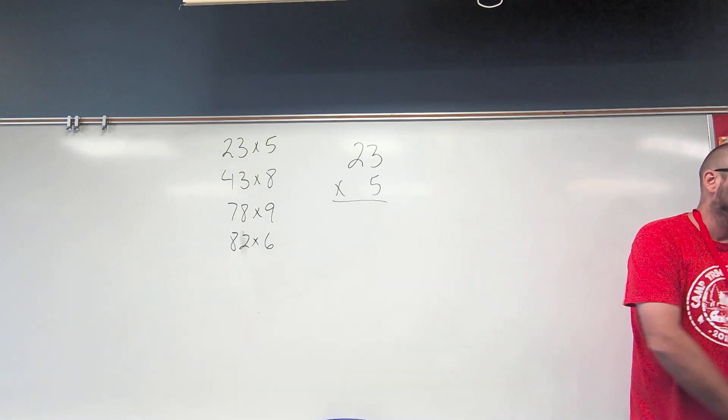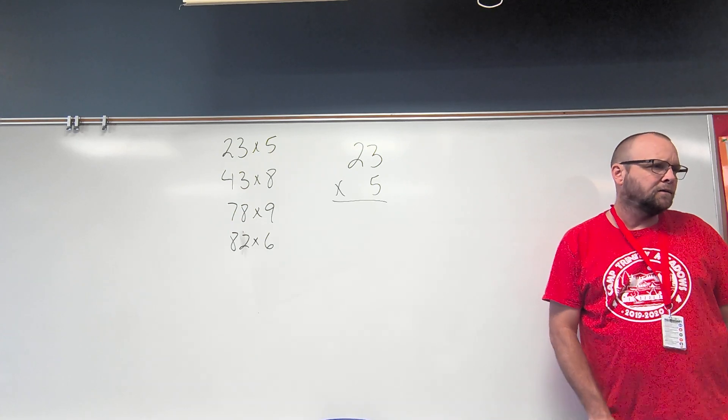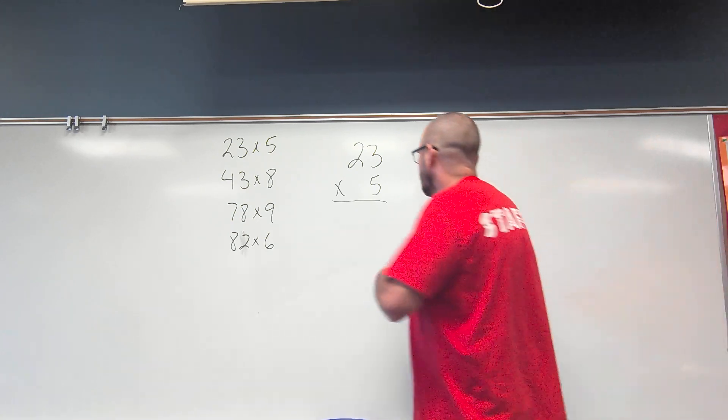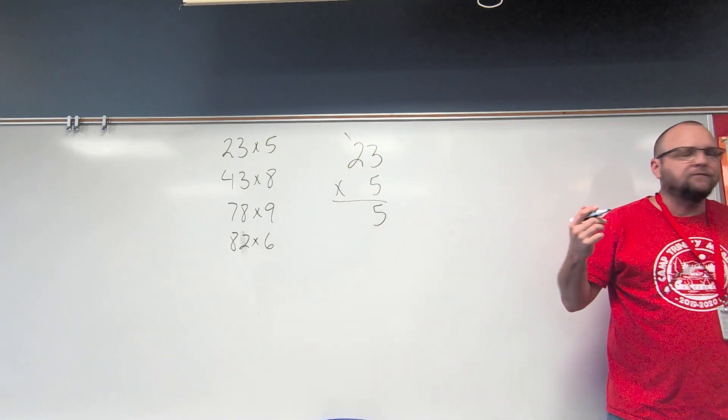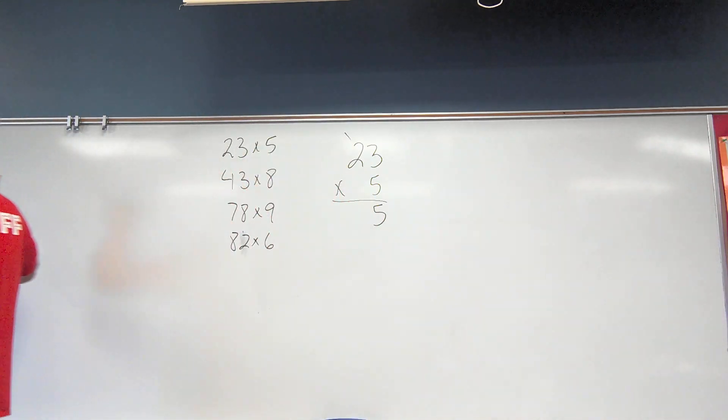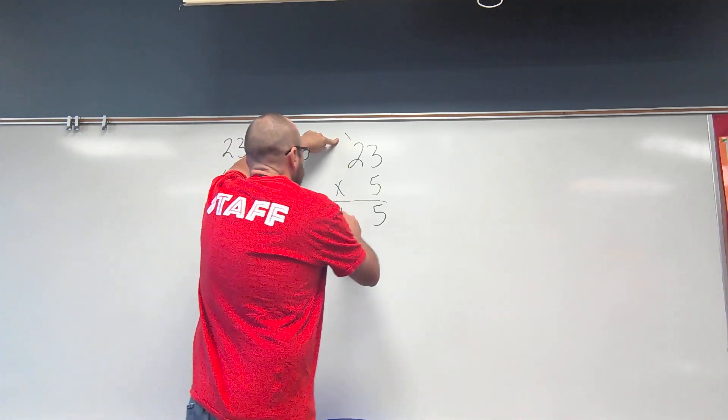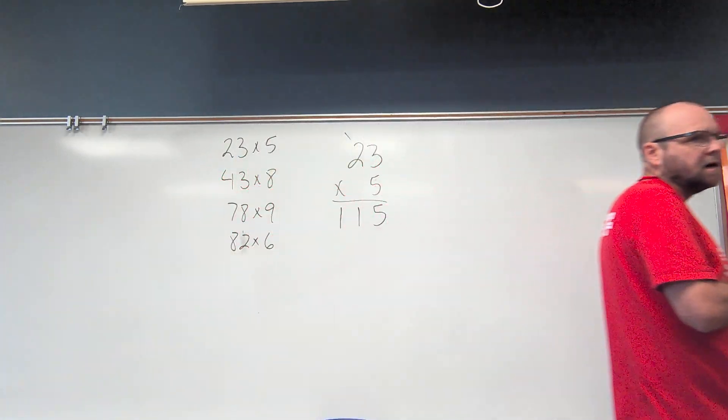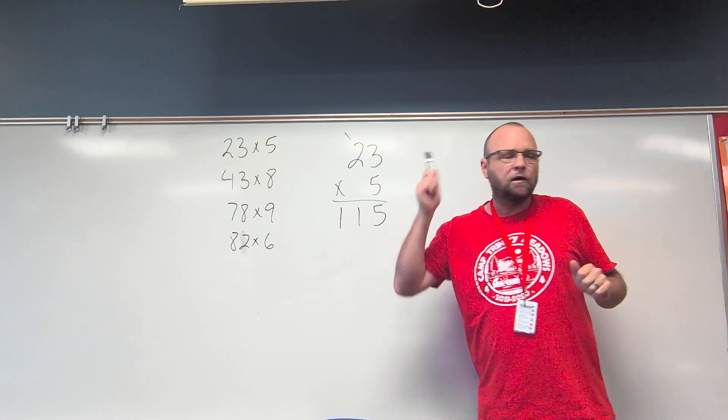So we have 23 times 5. Michael K., what is 5 times 3? It is 15. So I have 15 ones, or 5 ones and 1 ten still equals 15 ones. Same value. Michael K., what is 5 times 2? It is 10. So I have 10 tens plus the other 10 here, means I have 11 tens, which makes my product, product is the answer to a multiplication problem, my product 115.